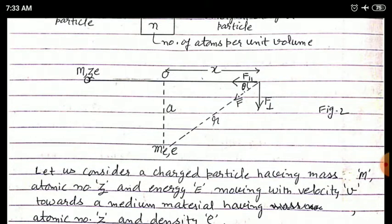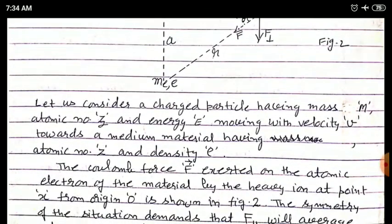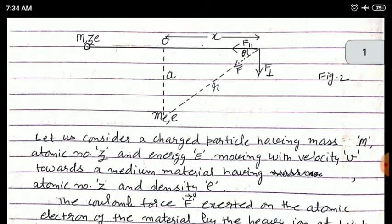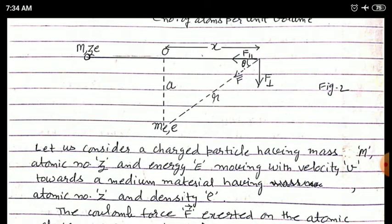In figure 2, on the left-hand side there is an incident heavy charged particle having mass M and charge Ze, where Z is a small letter. It exerts a force on an atomic electron placed at a distance x from the origin. The force is divided into two components: one parallel to the x-axis and one perpendicular to the x-axis.